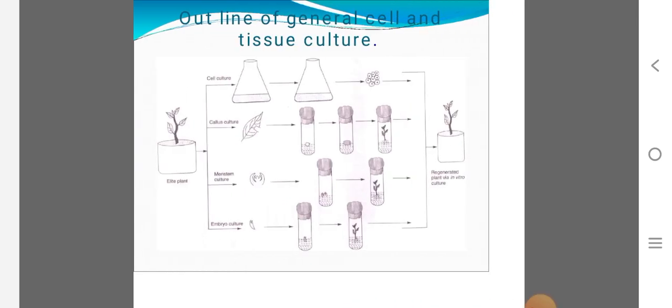It is the outline of the general cell and tissue culture. Here we can discuss this. One of the explant, we can see cell cultures. Callus we prepare. Or leaf cut, we can produce regenerated plant. We can produce in vitro within the laboratory.